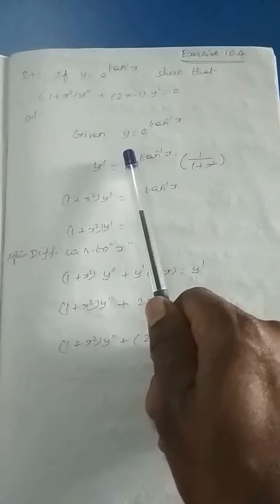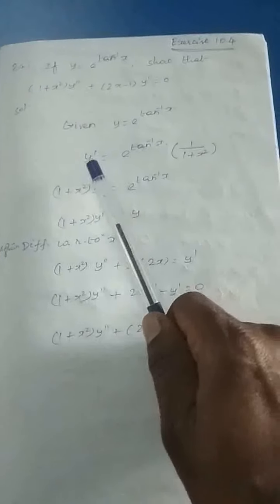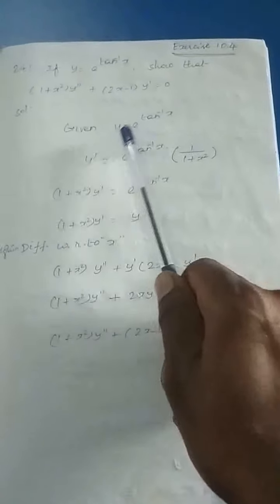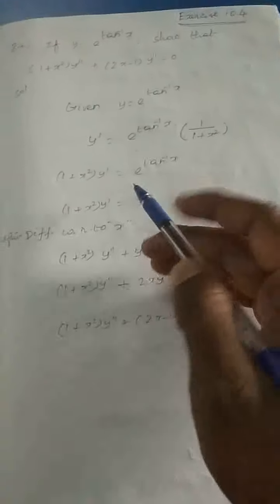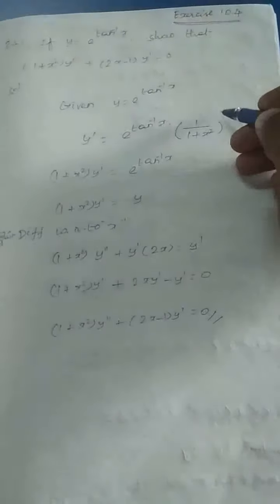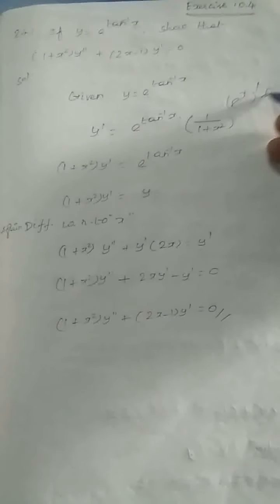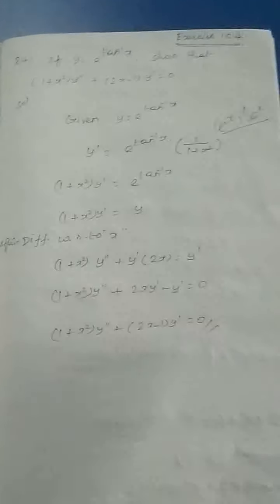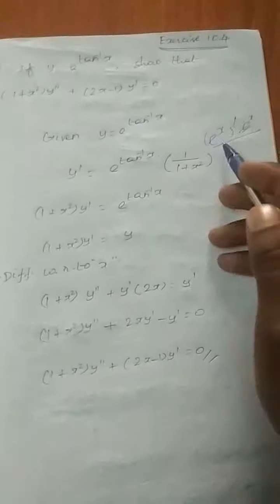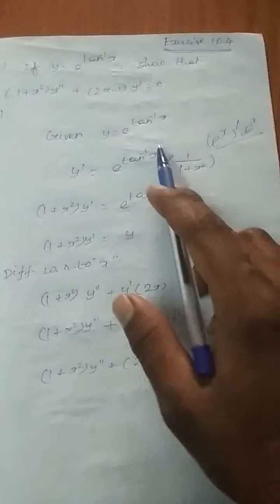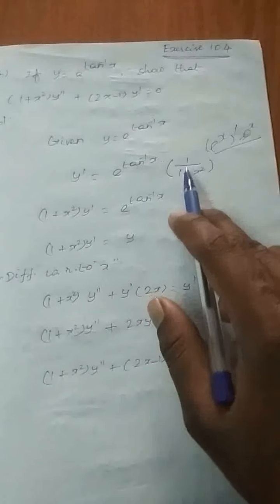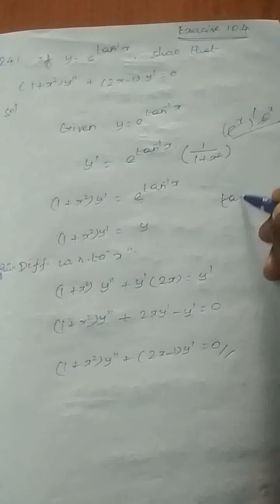Solution. Let y = e^(tan⁻¹x). Now, y dash means the derivative of y with respect to x. You know the e^x derivative formula is e^x only. So, e^(tan⁻¹x) derivative is e^(tan⁻¹x) multiplied by the chain rule — the derivative of tan⁻¹x, which is 1/(1 + x²). That is the inverse formula.